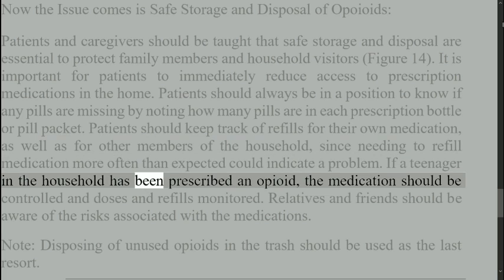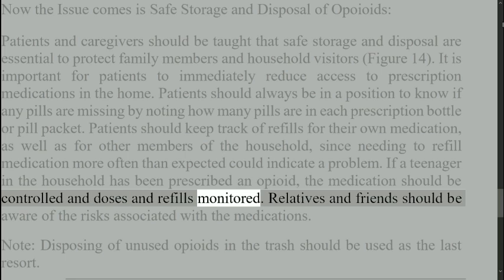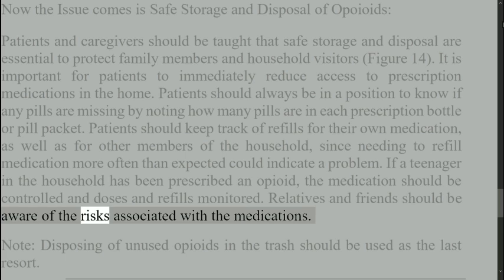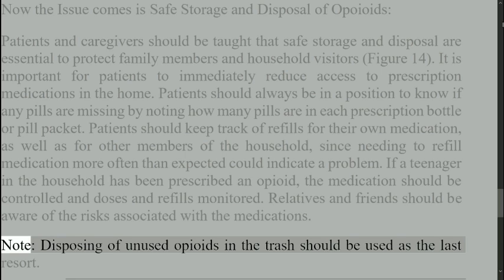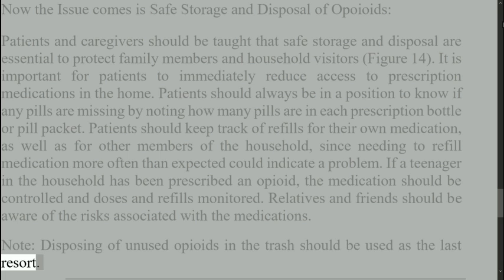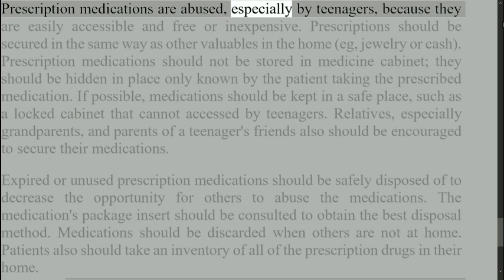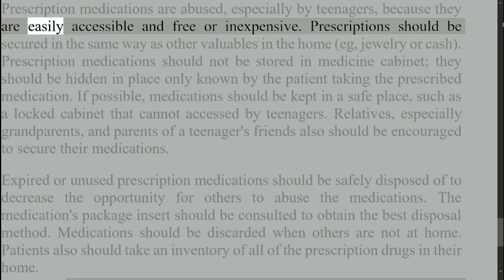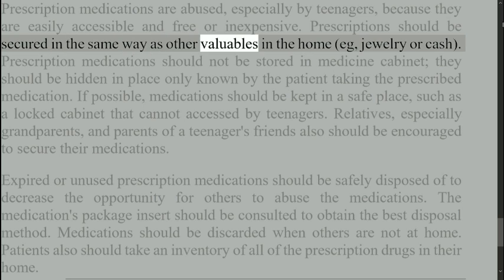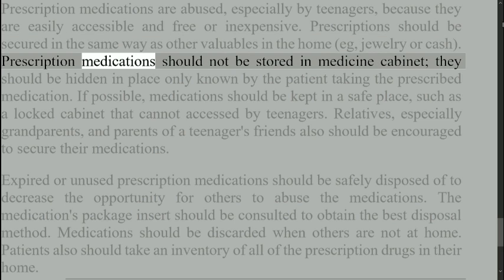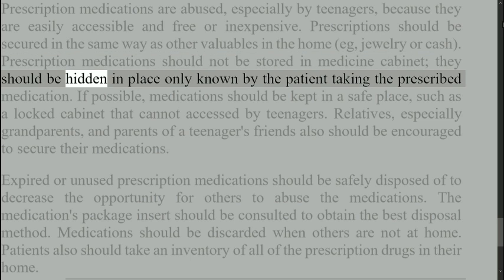If a teenager in the household has been prescribed an opioid, the medication should be controlled and doses and refills monitored. Relatives and friends should be aware of the risks associated with the medications. Note that disposing of unused opioids in the trash should be used as a last resort. Prescription medications are abused, especially by teenagers, because they are easily accessible and free or inexpensive. Prescriptions should be secured in the same way as other valuables in the home, such as jewellery or cash. Prescription medications should not be stored in a medicine cabinet; they should be hidden in a place only known by the patient taking the prescribed medication.